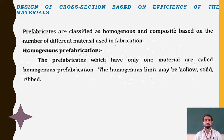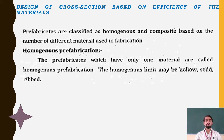Homogeneous prefabrication: the prefabricates which have only one material are called homogeneous. When we use a single material type for a particular panel or element, we call it homogeneous prefabrication. The homogeneous type may be hollow, solid, or ribbed, depending upon the condition.